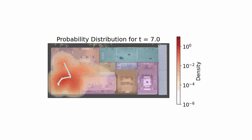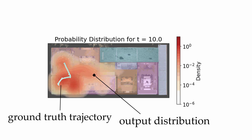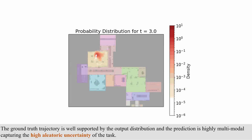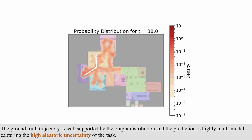A qualitative example of the resulting output distribution is shown here. The orange distribution is the output distribution of our method, while the white-green trajectory is the ground-truth human trajectory. Notice that the ground-truth trajectory is well supported by the output distribution and the prediction is highly multimodal, capturing the high aleatoric uncertainty of the task.